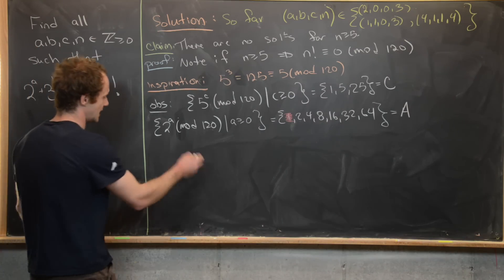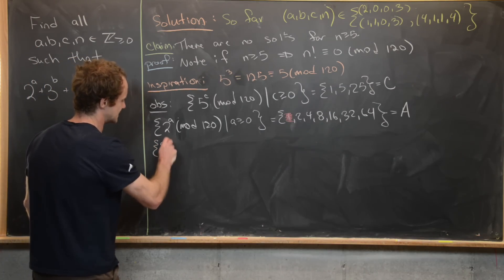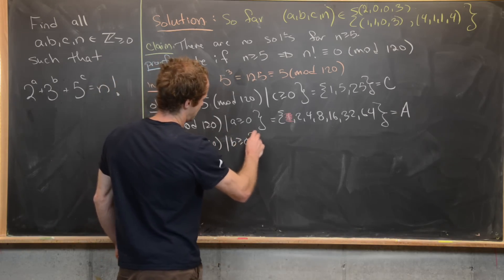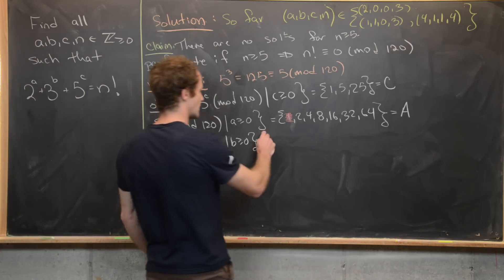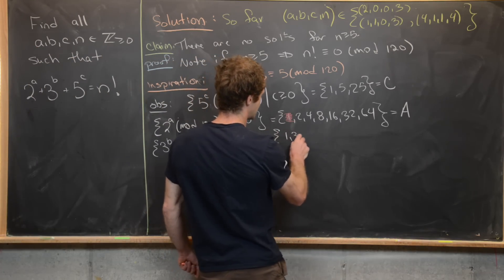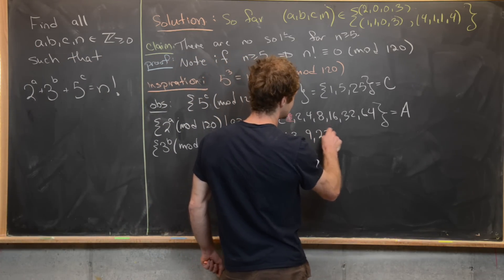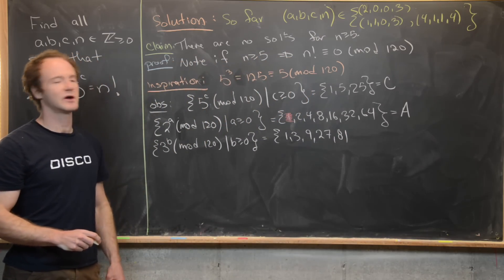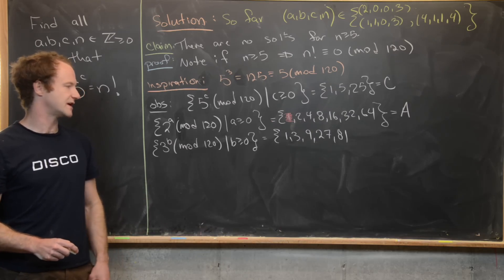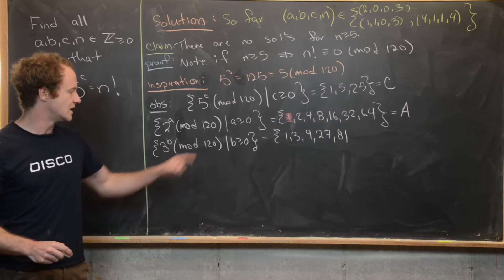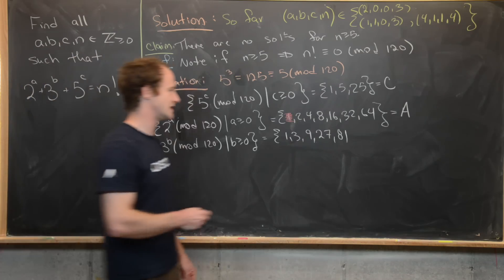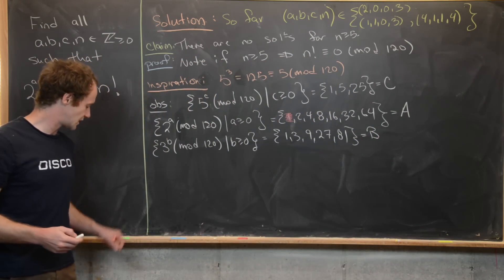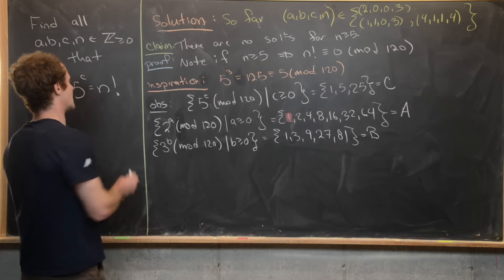For the powers of 3, the residues of 3^b mod 120 for non-negative integers b are: 1, 3, 9, 27, 81, and then 3^5 = 243. Since 243 = 240 + 3 and 240 = 2 × 120, we get 243 ≡ 3 mod 120 — so we can stop here. Call this set B = {1, 3, 9, 27, 81}.